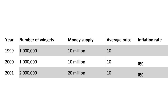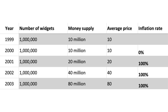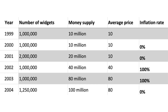And the inflation rate also remains at 0%. In this example, we get a constant output from 1999 to 2003, and the money supply steadily doubles, and this gives us an inflation rate of 100%. In this example, between 2003 and 2004, the number of widgets increases 25%, and in the same year the money supply increases 25%, so prices stay the same.